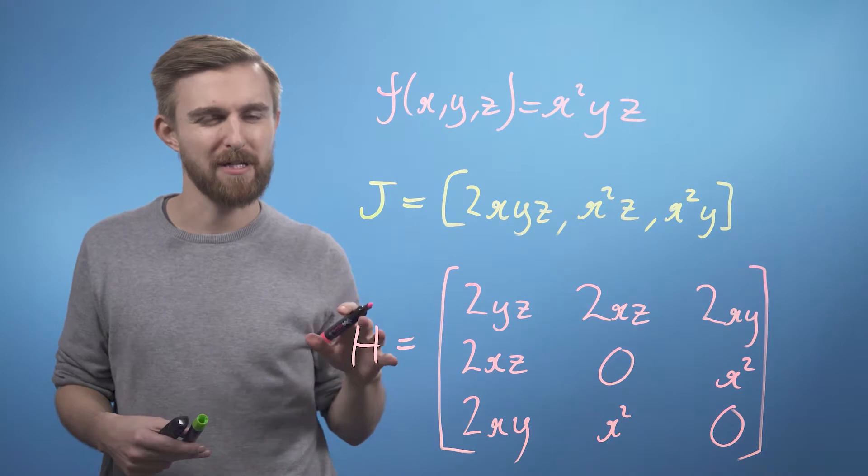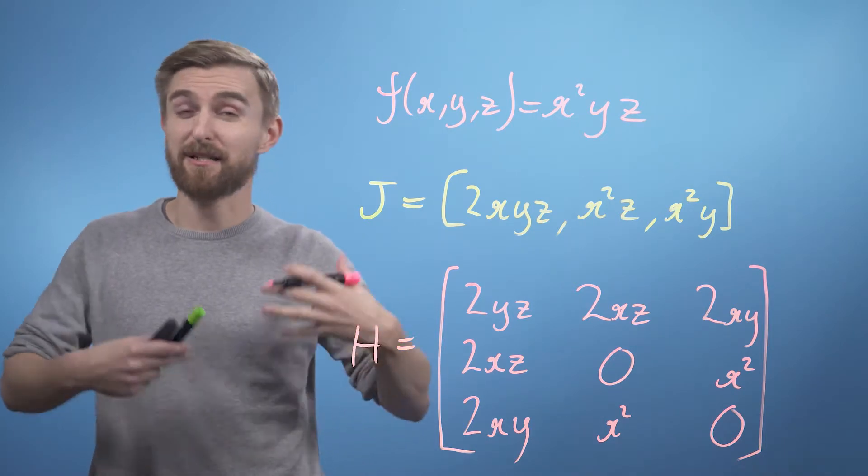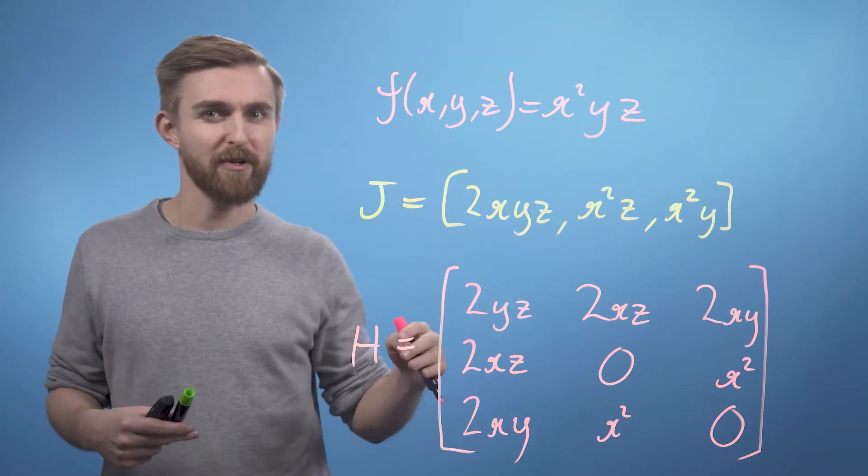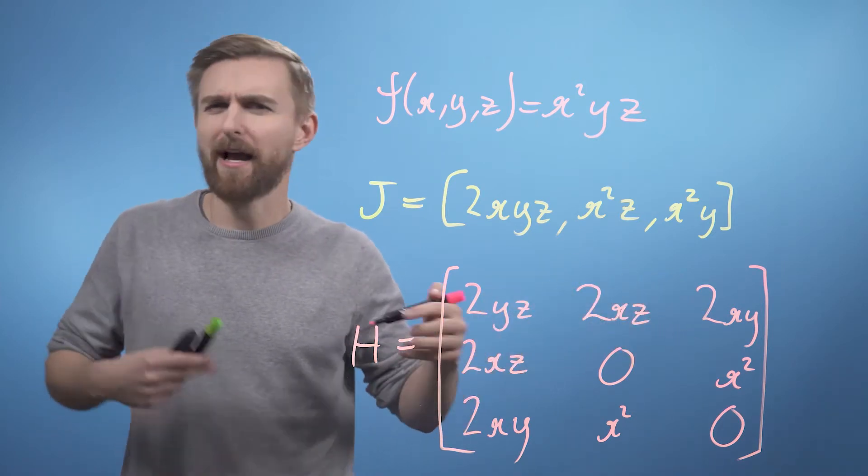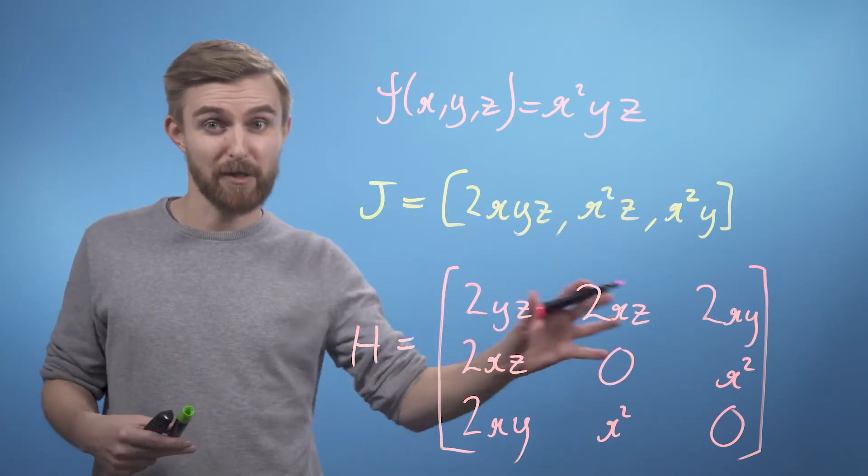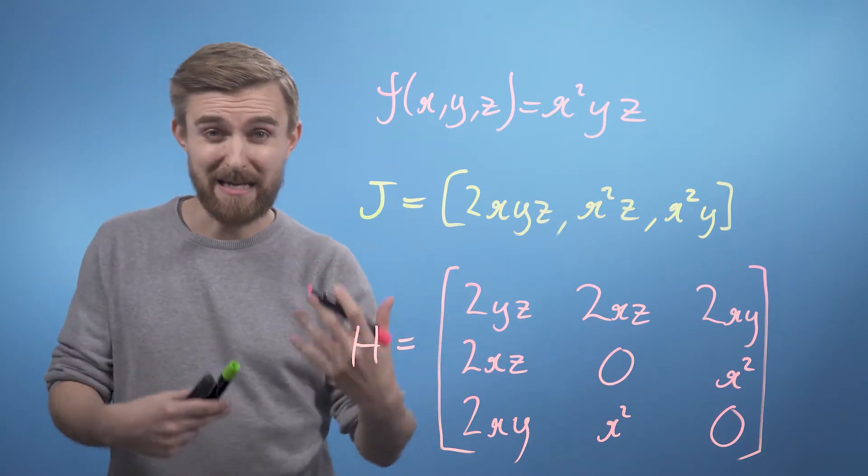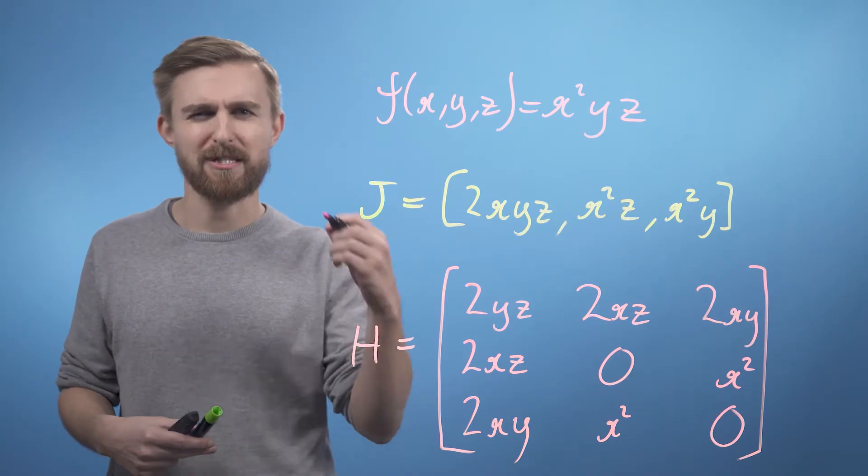So, one thing to notice here is that our Hessian matrix is symmetrical across the leading diagonal. So actually, once I'd worked out the top right region, I could just have written these directly in for the bottom left region. This will always be true if the function is continuous, meaning that it has no sudden step changes.